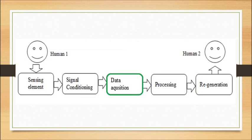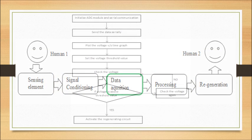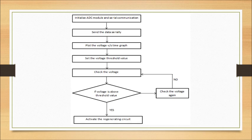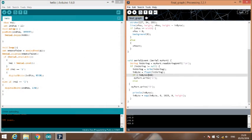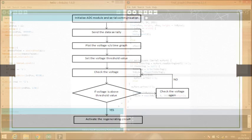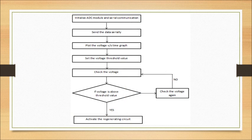The next stage being the data processing stage, we store the data and send it serially to the processing software to plot a graph and set the threshold value. If the data is above the threshold value, the next stage is activated, or else the process repeats itself until it meets the threshold.